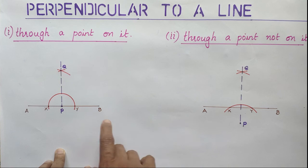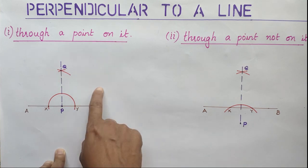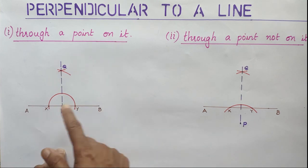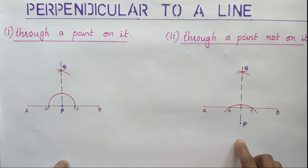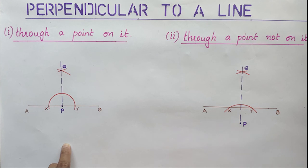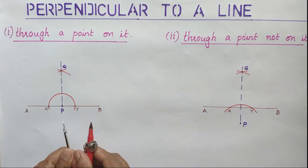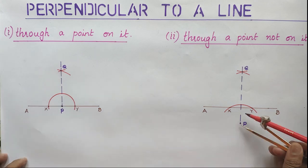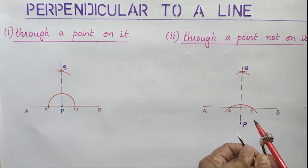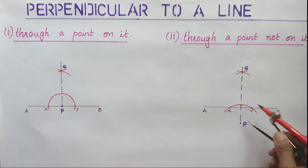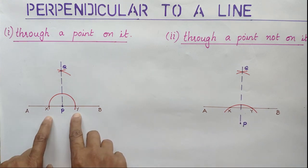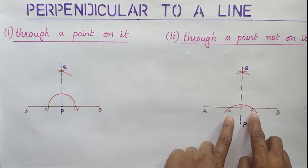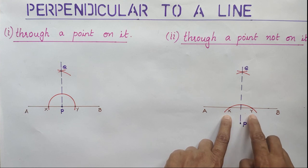Once again I will explain. Two cases are there: first case, we are taking the point on the line segment, and the second case, we are taking the point outside the line segment. In both cases, whether the point is on or outside, we must place the metal tip of the compass on P and draw an arc. The arc cuts the line segment into two different points X and Y.